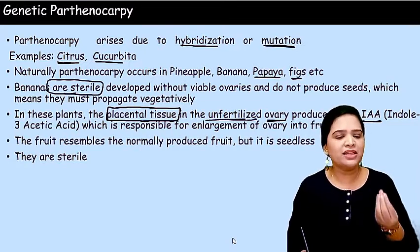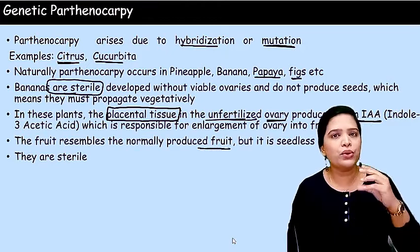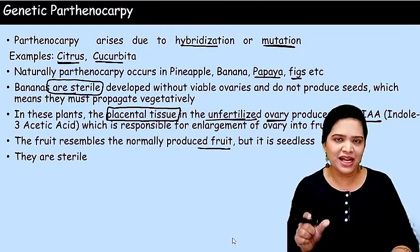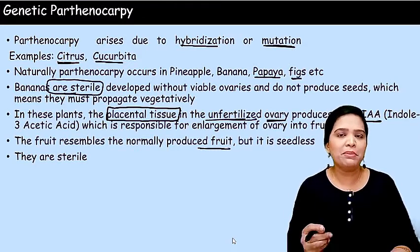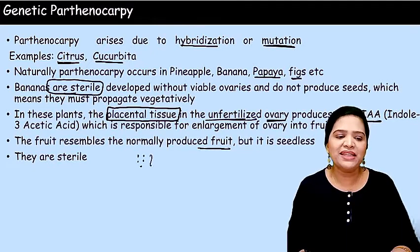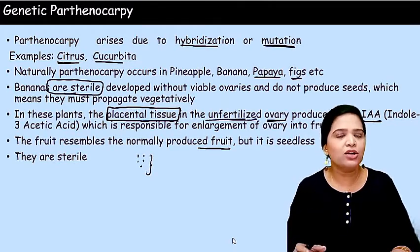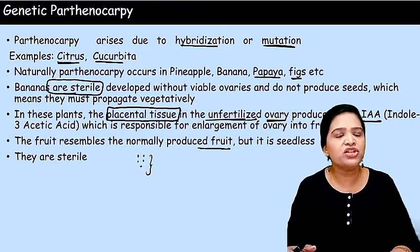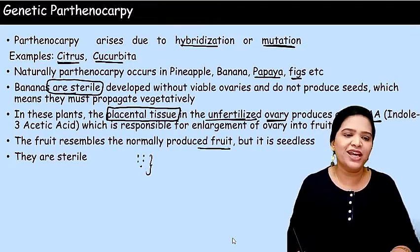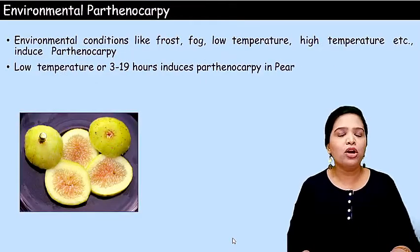The fruits produced through parthenocarpy are seedless and also bigger in size. For example in banana, when you cut it open you may see small seeds, but they are sterile non-viable seeds — they don't have any active embryo or endosperm and cannot propagate. So the only mode of propagation for banana is through vegetative propagation. This is called genetic parthenocarpy.